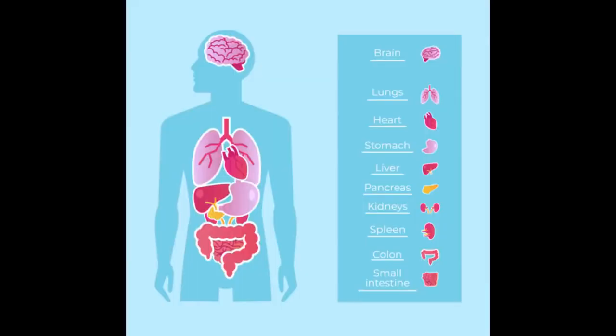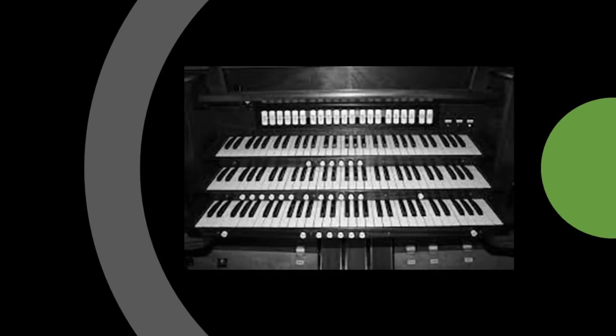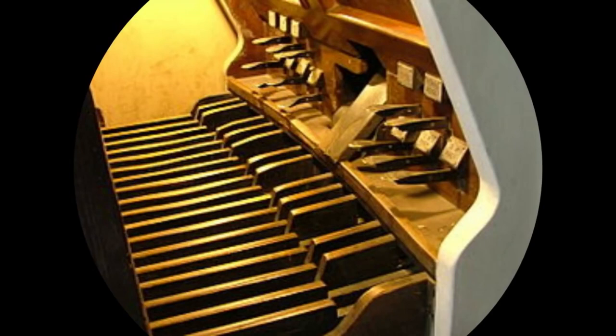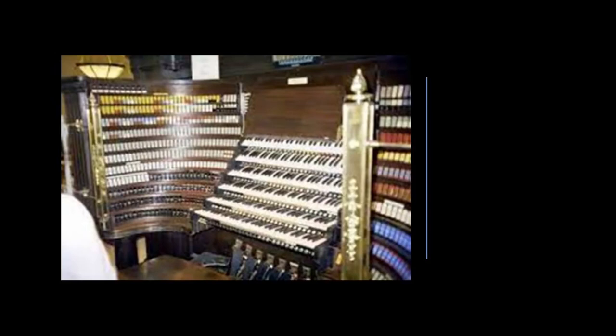Then there is the pipe organ found in cathedrals, a musical instrument that produces sound by driving pressurized air through organ pipes selected from a keyboard. In biology, an organ is a collection of tissues that structurally form a functional unit specialized to perform a particular function, from the Latin organum meaning an instrument or tool. A pipe organ has one or more keyboards played by the hands and a pedal keyboard played by the feet. Each keyboard contains its own division or group of stops. I have to wonder if pipe organs produce specific frequencies at specific times for specific reasons that had to do with the enhancement of the greater collective.